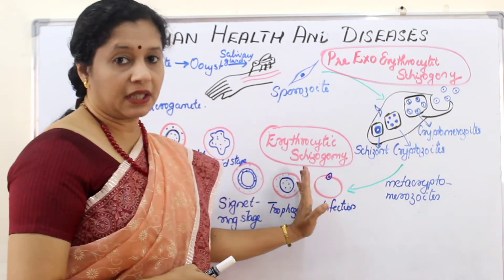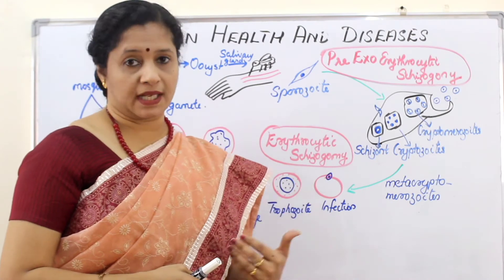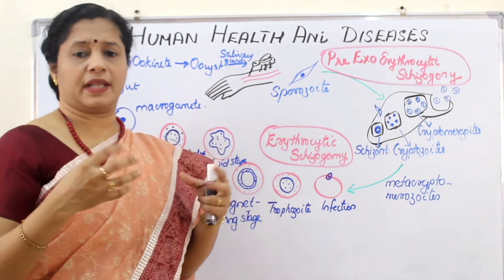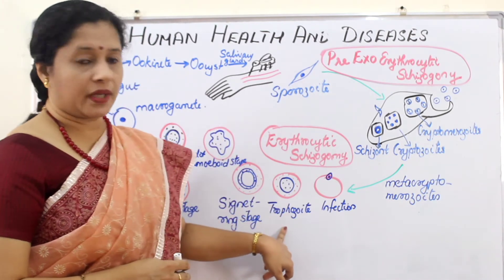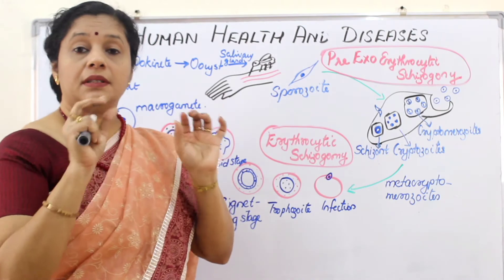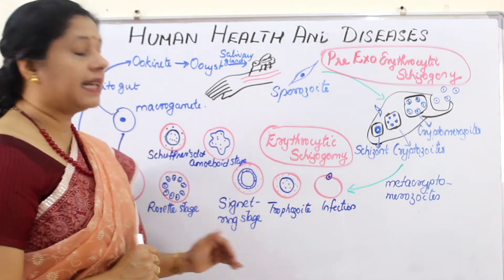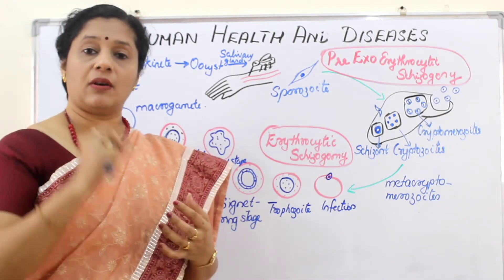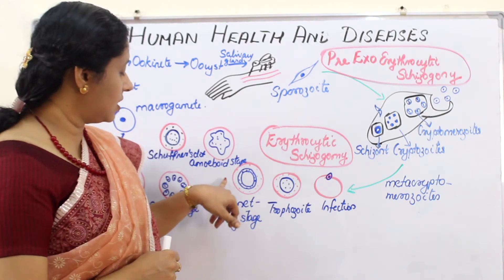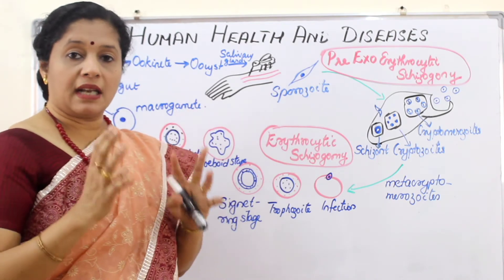Once merozooids enter the bloodstream, they infect RBCs — this stage is called the erythrocytic schizont stage (within the erythrocyte). Inside the RBC, the merozooid enlarges and grows using the cell's nutrition. That growing stage is called a trophozoite. The trophozoite then undergoes a morphological change into the signet ring stage, which has a ring form with a central vacuole. From the signet ring stage, it enters an amoeboid stage where the outline becomes irregular and the structure becomes large.